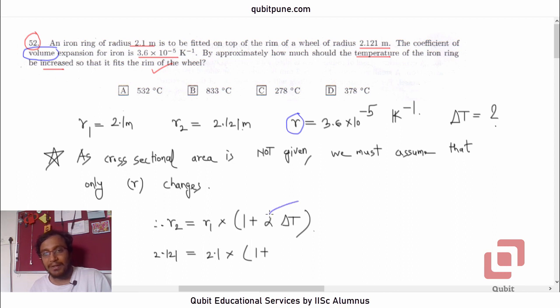So instead of using gamma, we must use alpha, which is 3.6 into 10 raised to negative 5 divided by 3. Gamma is 3 alpha, alpha is gamma by 3. So that is 1.2 into 10 raised to negative 5. And we can put it now here. 1.2 into 10 raised to negative 5 into delta T.